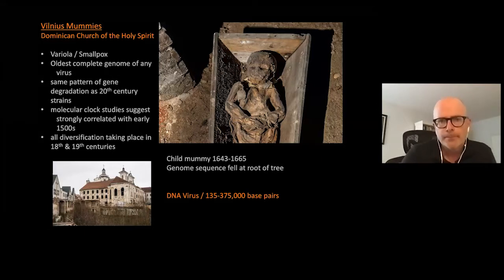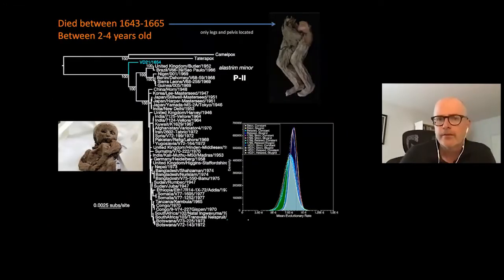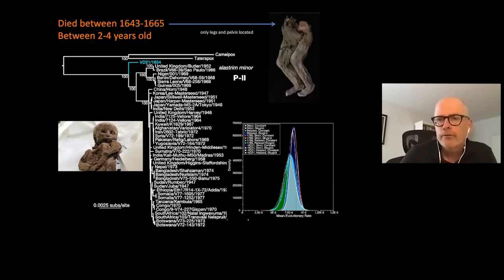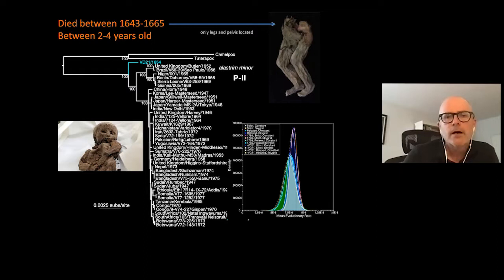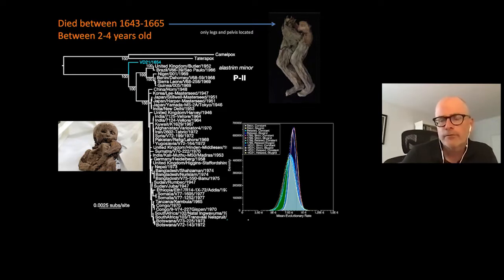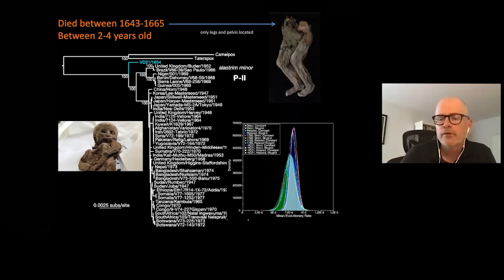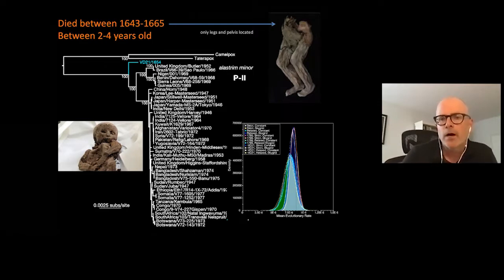When we talk about this particular mummy, she seems to have died between 1643 and 1665 and was between two and four years old. The one that is the most important was only a torso and legs — in other words, the pelvis down — and the rest of the mummy seems to have been missing. It is from this particular mummy that the smallpox was in fact isolated.